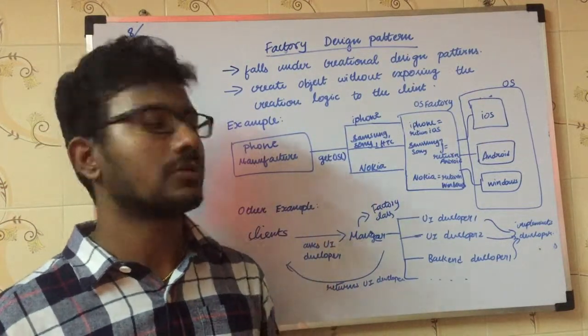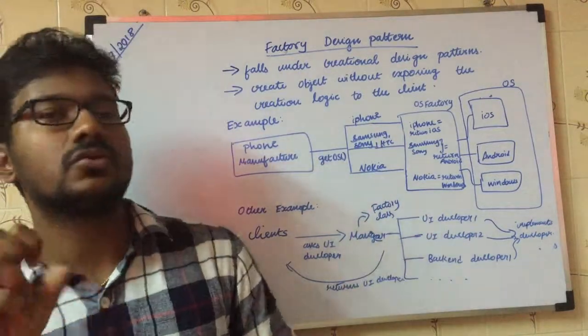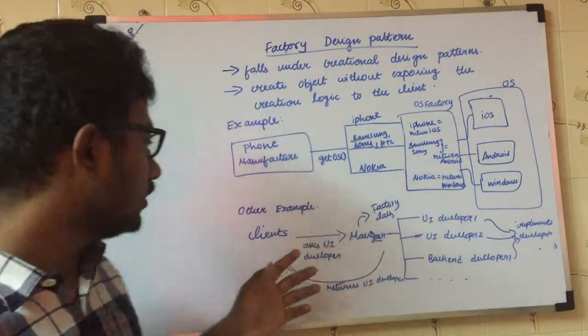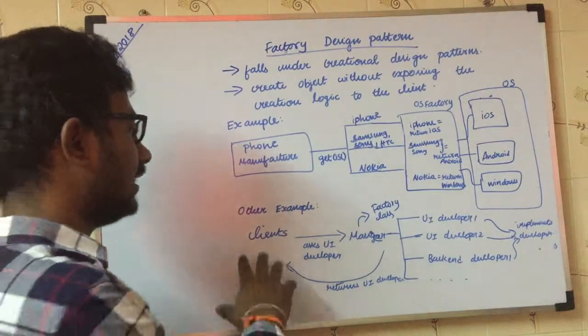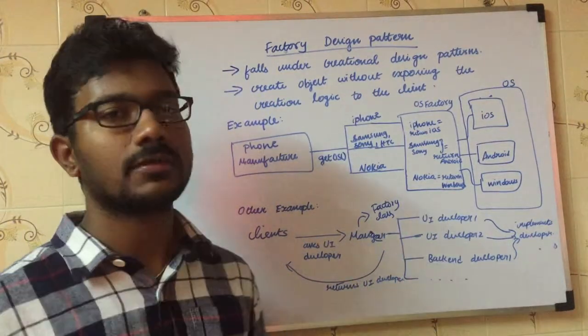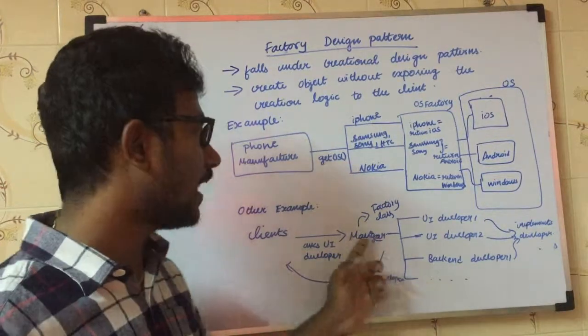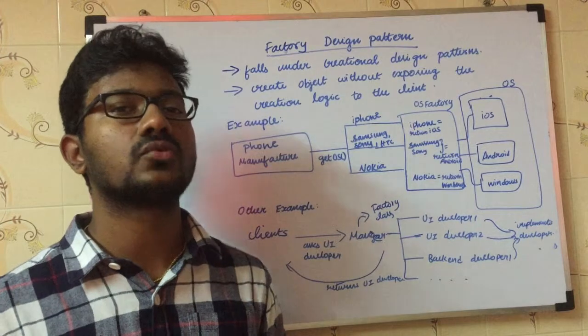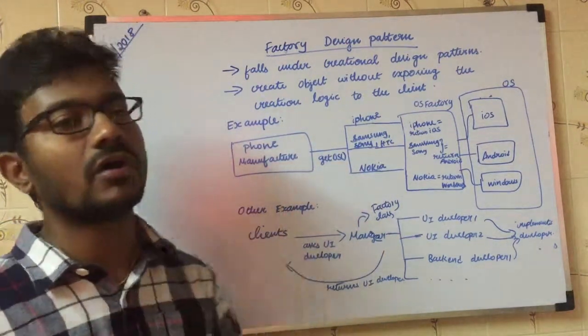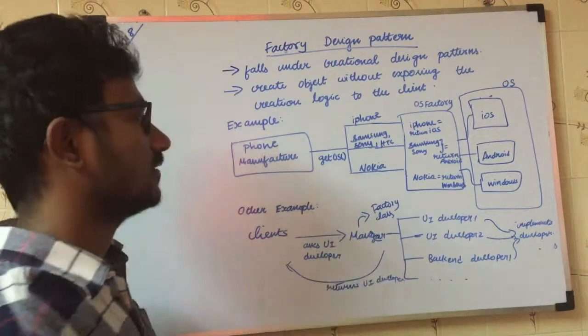He uses those two criteria for picking the UI developer. According to these examples, the client doesn't have any knowledge regarding the UI developers. He needs just a UI developer based on some criteria. The manager handles those criteria and returns the best object for those criteria. Here manager acts as a factory class.